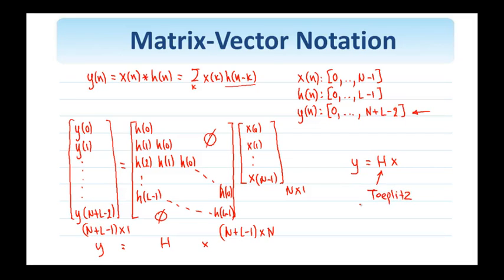We'll see next that by modifying the signal and the matrix, we can write indeed the matrix-vector form for the circular convolution and then this matrix H is going to have another form which we'll call circulant matrix.